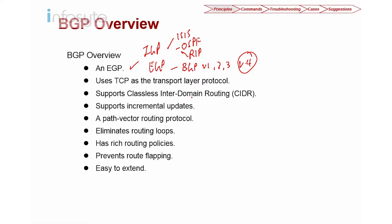BGP uses TCP as a transport layer. Among all the protocols mentioned, only BGP uses TCP, and the port number they use is TCP 179 as their destination port. The source port can be random. BGP supports classless inter-domain routing — so this is not a classful but a classless routing protocol.